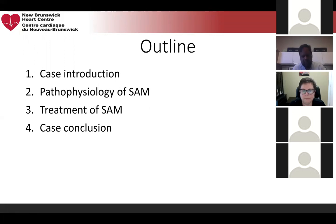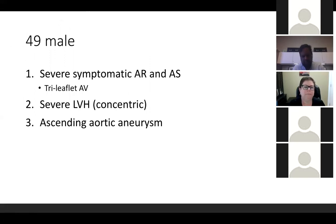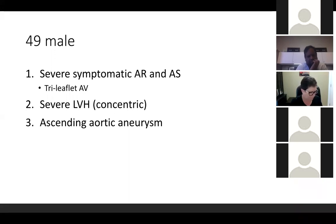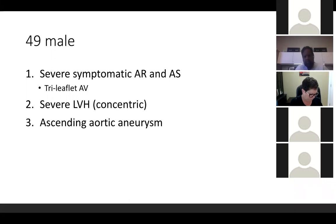This is a 49-year-old gentleman who last Friday had surgery. He had symptomatic severe aortic insufficiency and aortic stenosis. Interestingly, despite being 49, his valve was tri-leaflet. When you read his echo report, he had severe AI, and his elevated gradients were thought to be partly due to the AI — meaning his aortic stenosis was not necessarily the driving pathology.